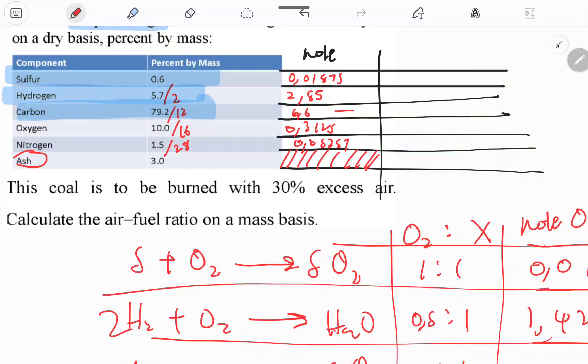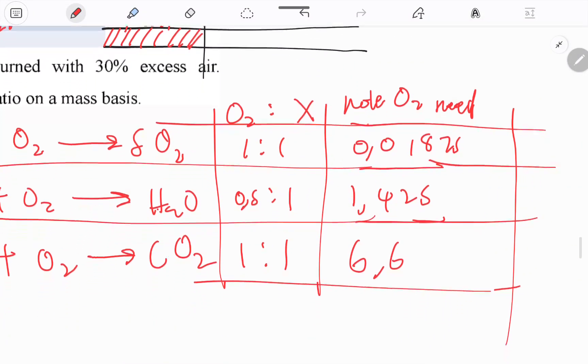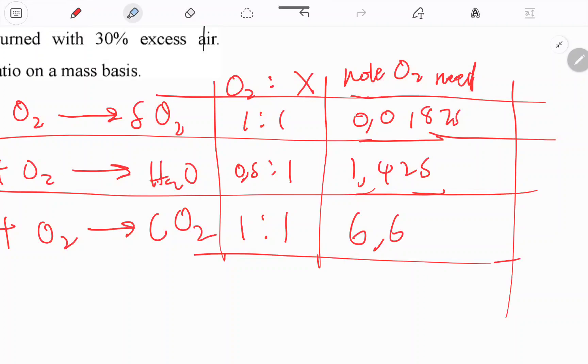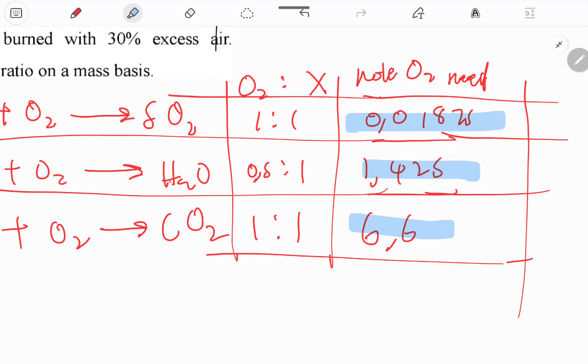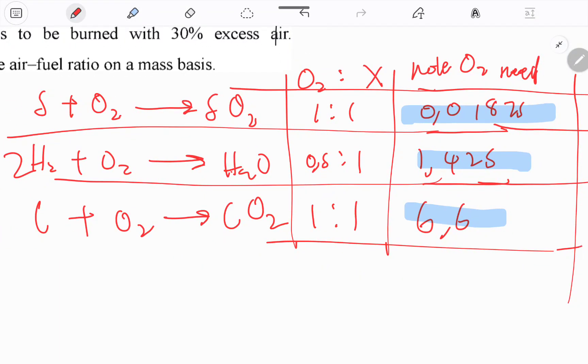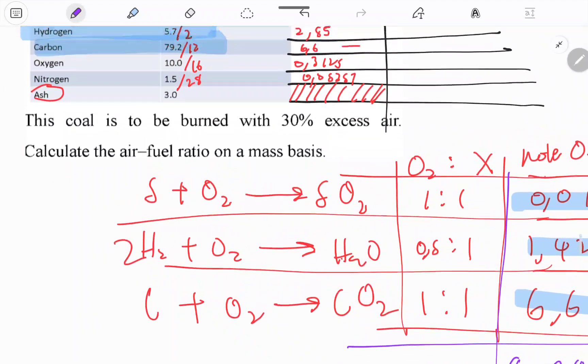We want to get 1.425 for hydrogen, and then for carbon we take it as is, 6.6. From here, these are literally oxygen needed per sub-combustion reaction. To find the total oxygen needed, we add all these moles.